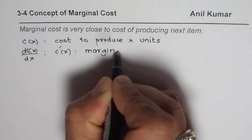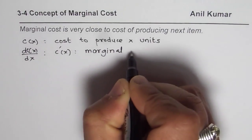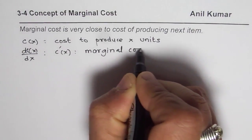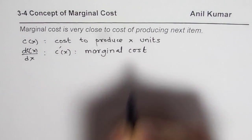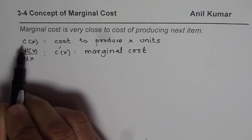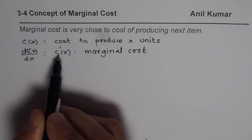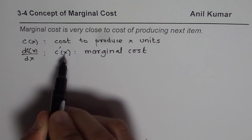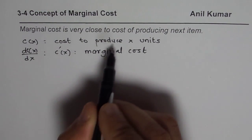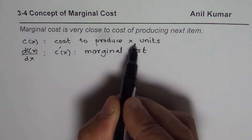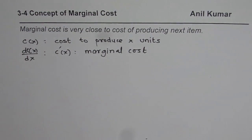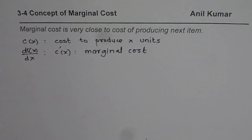So normally in any equation, if you want to know the marginal cost and you are given the cost itself, then just find the derivative and replace the value of X with the number of items being produced and you will get your answer. So that is an easy way of getting the answer.